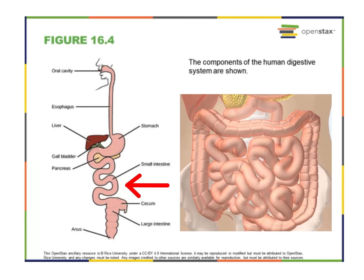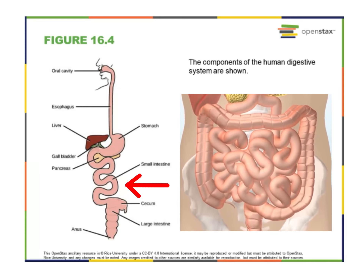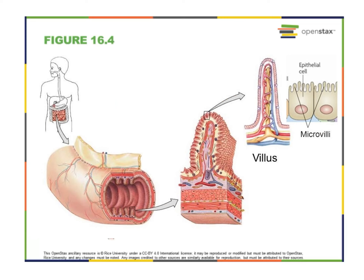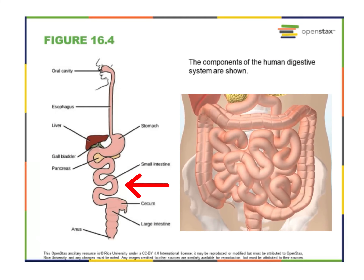Once chyme moves through the small intestine, that's where a lot of the digestion of proteins, fats, and carbohydrates occurs. The small intestine is a long tube-like organ with highly folded surfaces, and it contains these finger-like projections called villi. This helps increase the surface area — the amount of area in which the edges of the small intestine can interact with and absorb material.